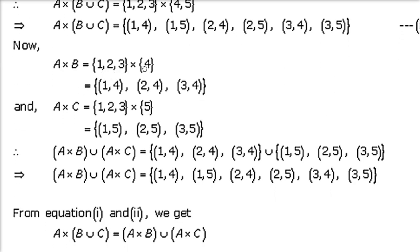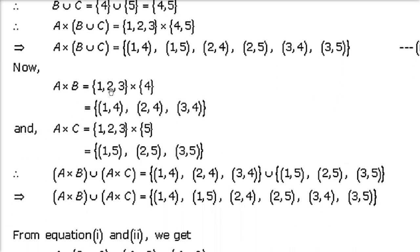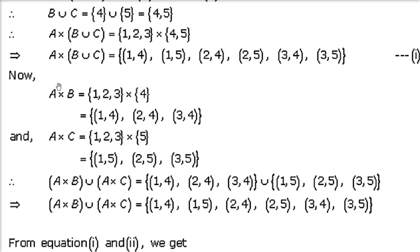Coming to A cross B: (1,4), (2,4), (3,4). And A cross C: (1,5), (2,5), (3,5). Now take the union — nothing is common between these two, so all members come. If you see A cross (B union C) and (A cross B) union (A cross C), these members are exactly equal. So we can write these two are equal.